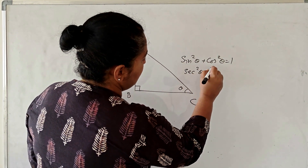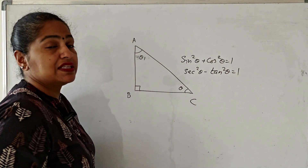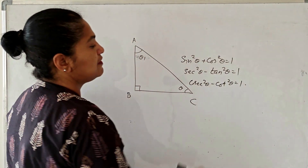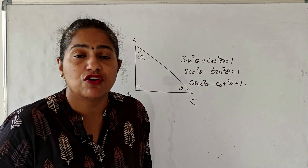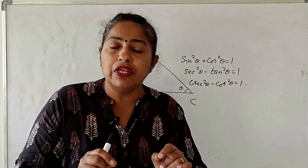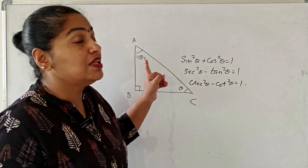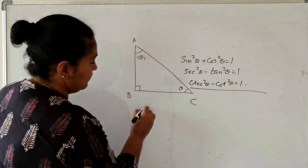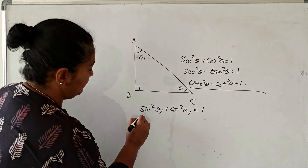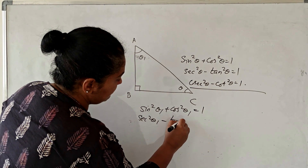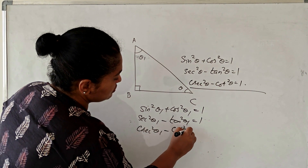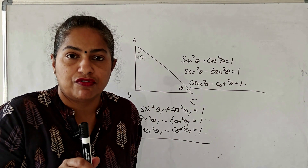The second identity is sec²θ - tan²θ = 1, and the third is cosec²θ - cot²θ = 1. These are the three trigonometric identities concerned with angle theta. For angle theta 1, we write them as: sin²θ₁ + cos²θ₁ = 1, sec²θ₁ - tan²θ₁ = 1, and cosec²θ₁ - cot²θ₁ = 1.